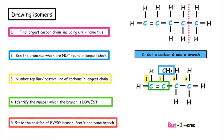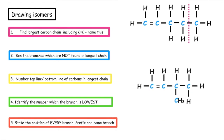However, I've got a branch and I have to state the position of that branch. The name of this alkene would be 2-methyl-but-1-ene.